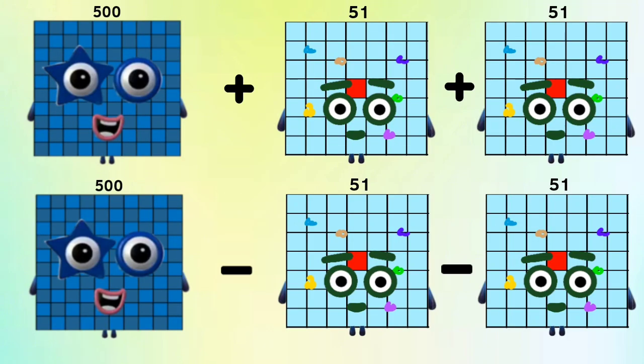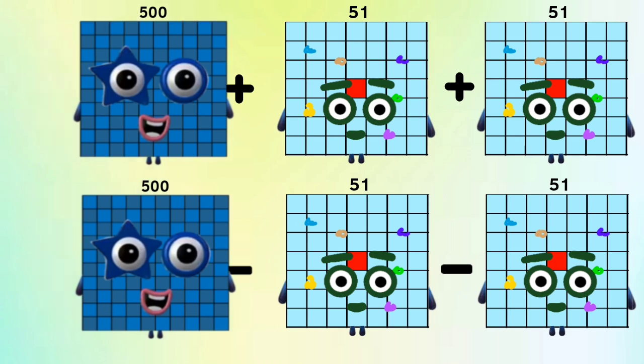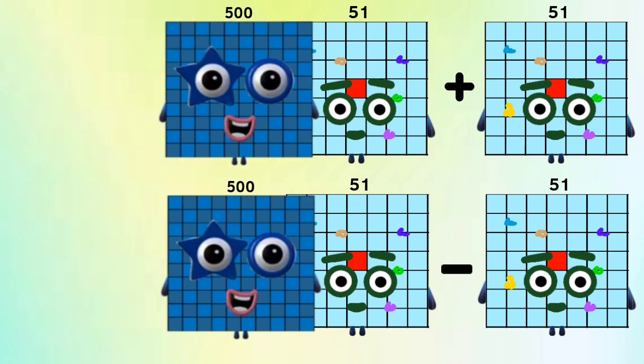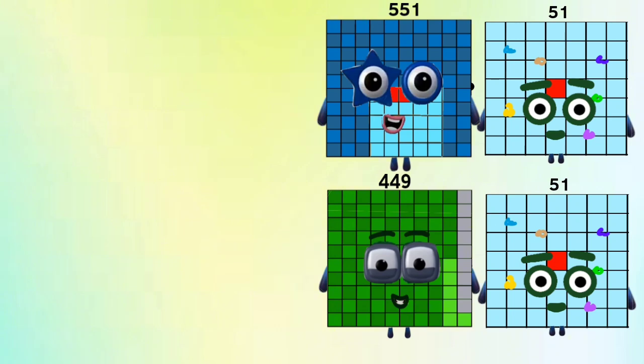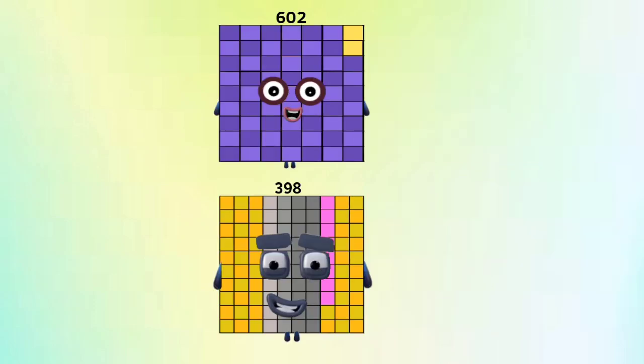Number Blocks 500 plus and minus Number Blocks 51 equals Number Blocks 551 and 449. Number Blocks 500 plus Number Blocks 51 and Number Blocks 449 minus Number Blocks 51 equals Number Blocks 602 and 398.